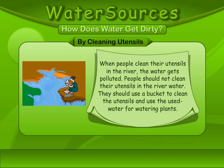By cleaning utensils. When people clean their utensils in the river, the water gets polluted. People should not clean their utensils in river water. They should use a bucket to clean utensils and use the used water for watering plants.